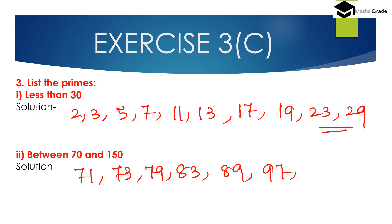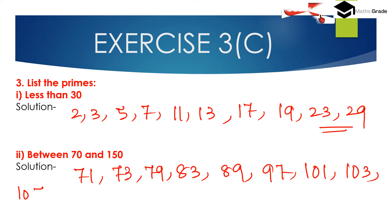Continuing the prime numbers between 70 and 150: 101 is a prime number. 102 is not prime. 103 is a prime number. 105 is not prime. 106 is not prime. 107 is a prime number. 109 is a prime number.